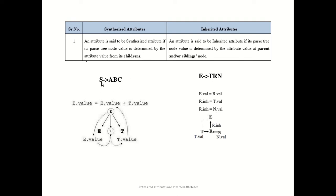What is the meaning of this? Consider the grammar S → ABC. The value of A.S will be obtained from A, B, and C — its children. As shown in the diagram, E.value is equal to E.value plus T.value. This means the root node E.value is getting its value from the child nodes E and T.